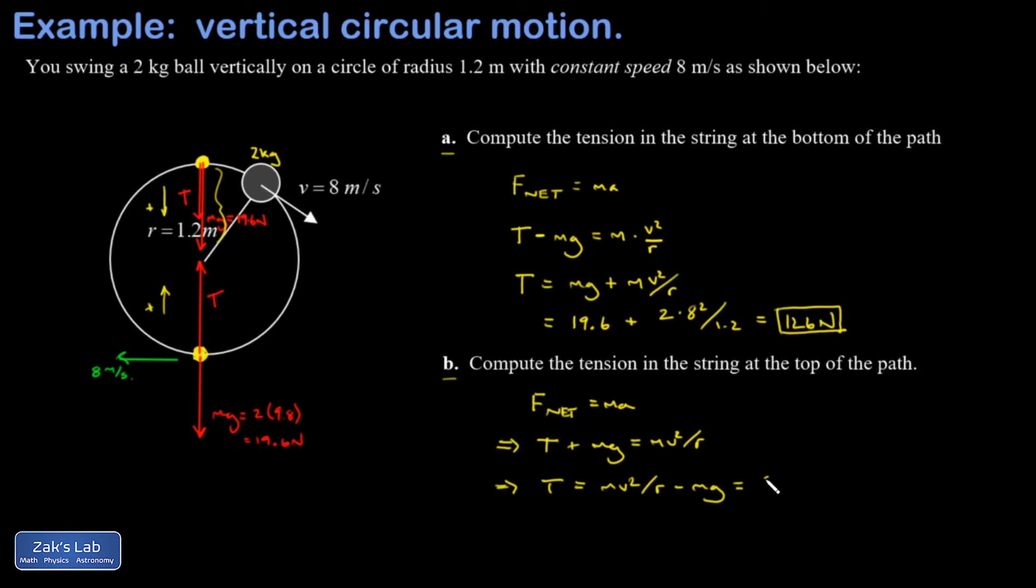So I get two times eight squared over 1.2 minus 19.6 and now the tension is only 87.1 newtons.